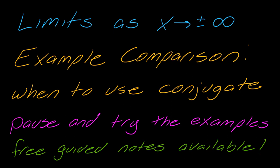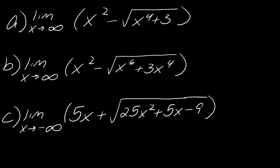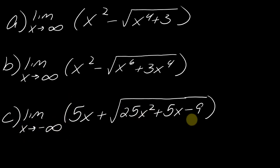Hey guys, so I've been asked some interesting questions trying to clear up some confusion about when to use a conjugate with limits as x approaches positive or negative infinity. I have three examples here that I think are going to be really helpful for sorting out some of these things. The first two compare different techniques, and the last one involves something tricky that happens specifically as x goes to negative infinity.